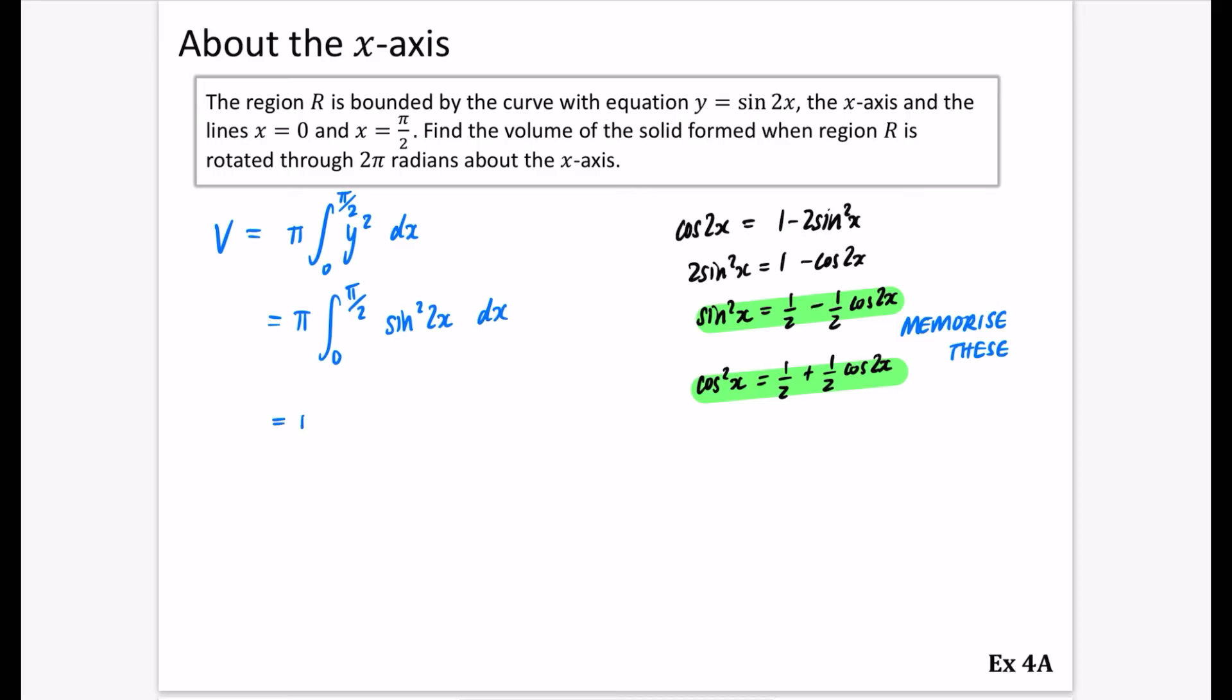So this means I can actually just go straight in, and instead of doing sine-squared of 2x, be really careful, the angle doubles. It's going to be 1 half minus 1 half cos, double that angle, 4x dx, like this.